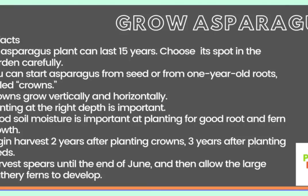An asparagus plant can last 15 years, so choose its spot in the garden carefully. You can start asparagus from seed or from one-year-old roots called crowns. Crowns grow vertically and horizontally, and planting at the right depth is important. Good soil moisture is important at planting for good root and fern growth. Begin harvest 2 years after planting crowns, or 3 years after planting seeds.